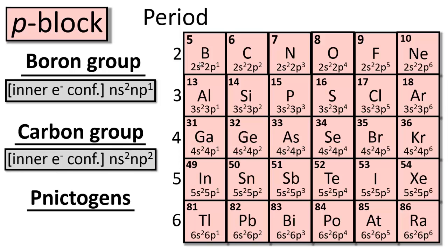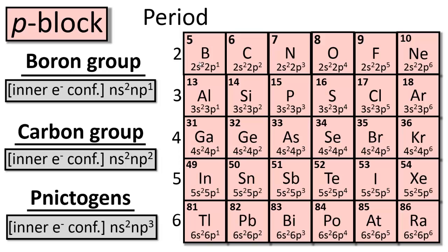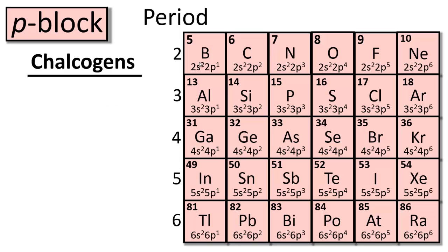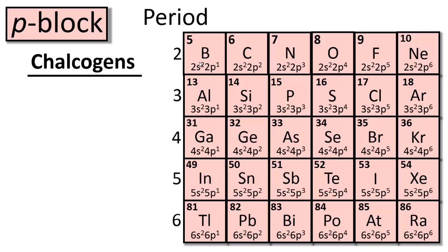For the pnictogens — that's nitrogen, phosphorus, and so on — the electron configuration is the inner electron configuration plus ns² np³. For the chalcogens — that's oxygen, sulfur, and so on — the electron configuration is the inner electron configuration plus ns² np⁴.